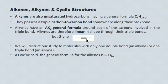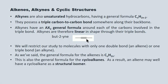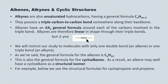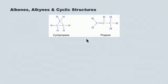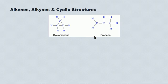The general formula for alkenes is CnH2n — this is also the general formula for the cycloalkanes. As a result, an alkene can have a structural isomer that's a cycloalkane. For example, cyclopropane and propene both have the formula C3H6, but each has a unique arrangement of atoms — cyclopropane has three carbons in a cyclic structure, while propene has three carbons in a linear arrangement. They are structural isomers of one another.